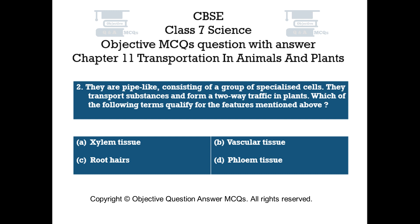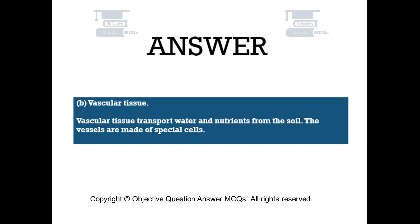The right answer is Option B: Vascular Tissue. Vascular tissue transports water and nutrients from the soil. The vessels are made of special cells.